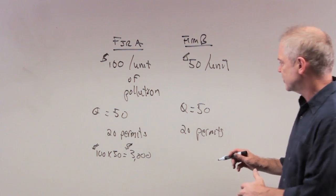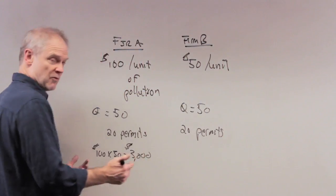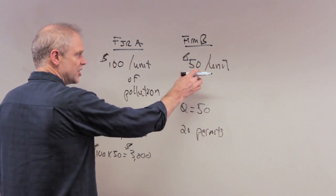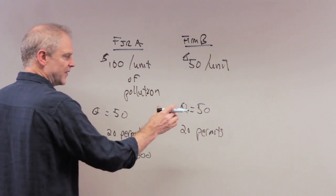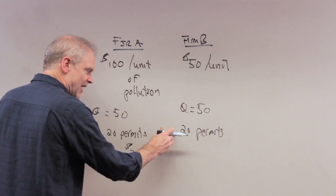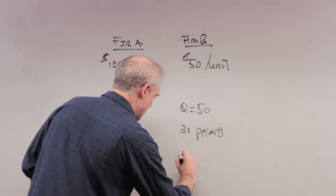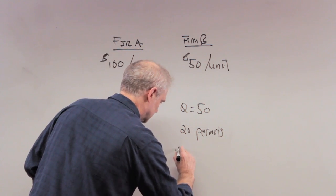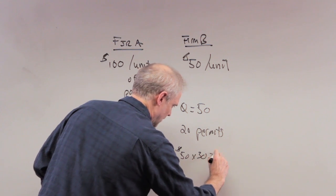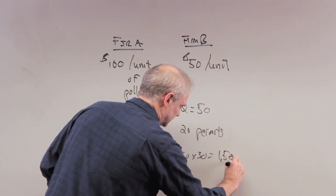Now go to firm B. What's it going to cost firm B? Well, they're more efficient in the sense it doesn't cost so much. So it's $50 per unit. They're producing 50 units, they're allowed to produce 20, they've got to get rid of 30. So now it's $50 times 30, or $1,500.